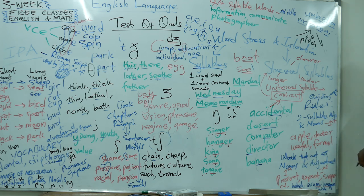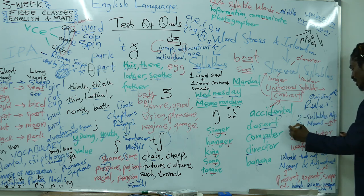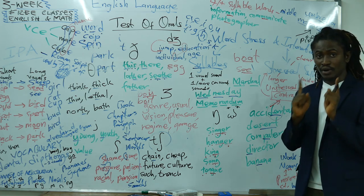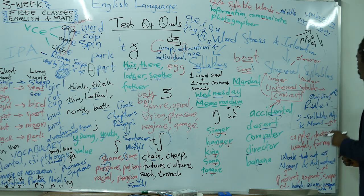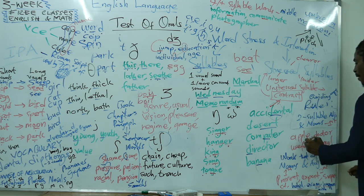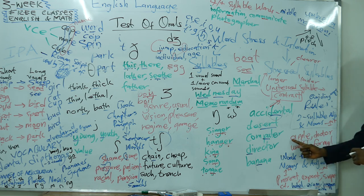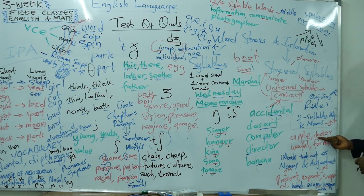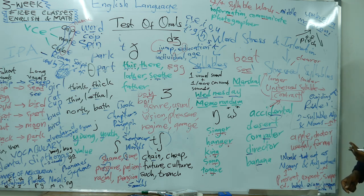Now, some rules to keep in mind — these are guiding rules with some exceptions. When you're dealing with two-syllable adjectives and nouns, the stress is often on the first syllable. For example, 'apple' — AP-ple. The stress is on the first syllable. And then 'doctor' — DOC-tor. The first syllable is what we stress because it's a two-syllable noun: this is my DOC-tor.